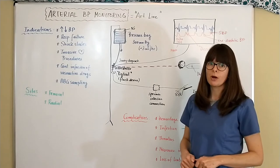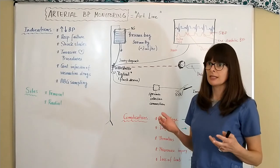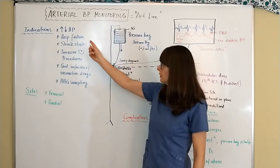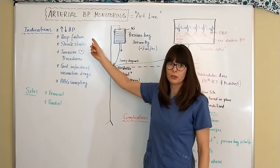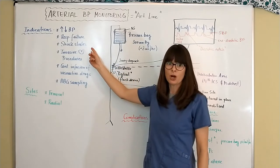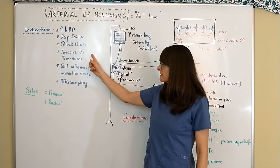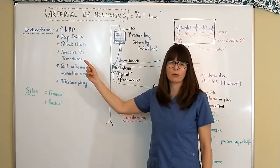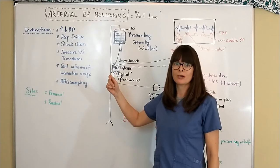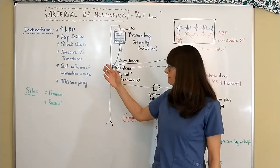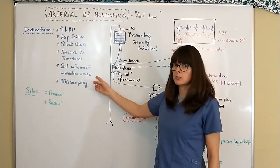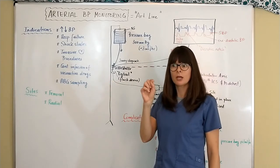So indications for arterial blood pressure monitoring are critically ill patients such as those with extremely high or low blood pressure, those on respiratory failure who might be intubated, any kind of shock states, invasive heart procedures like bypass surgery, heart transplantation, anything that involves the heart or valve replacements.